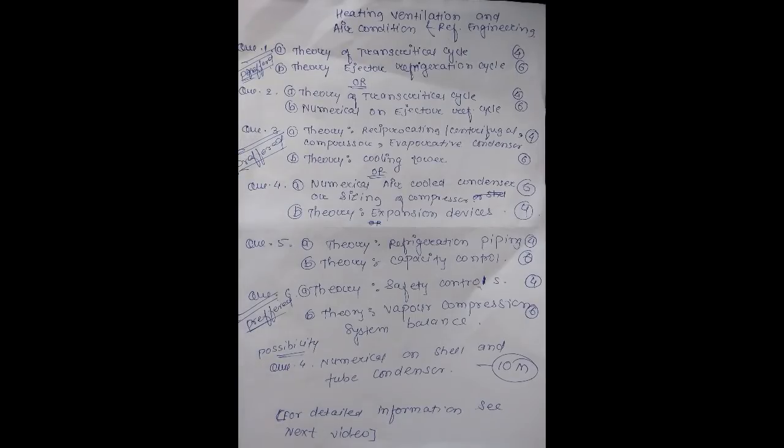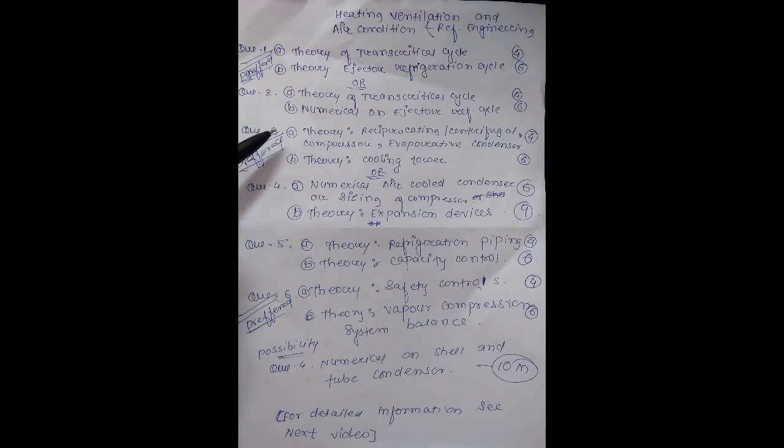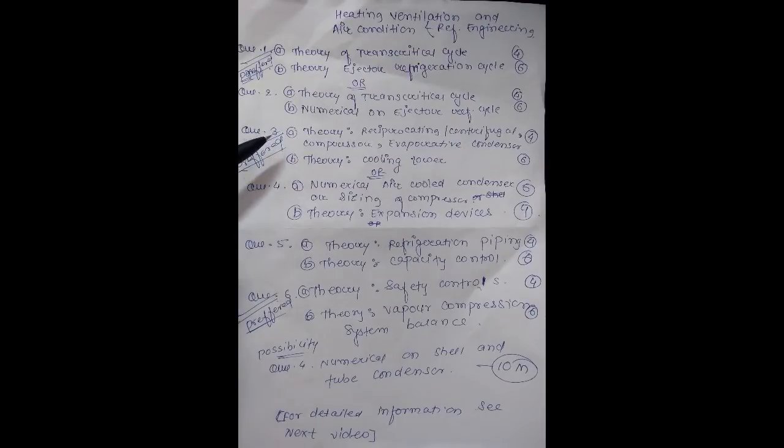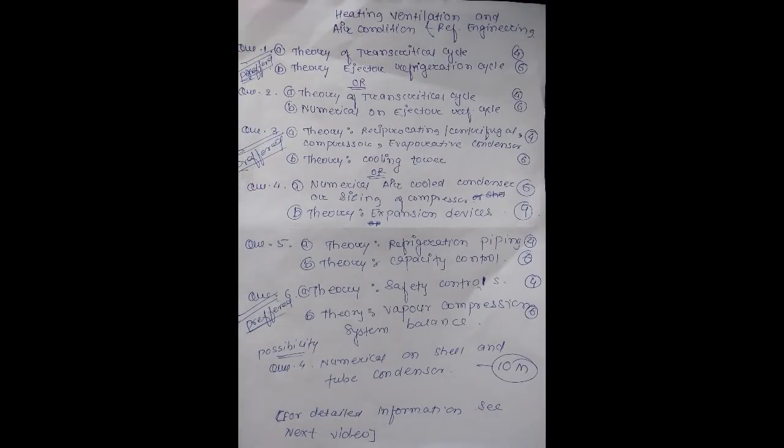Second unit is big and generally the numerical type unit. But question number 3A is theory on reciprocating and centrifugal compressor. Theory on reciprocating and centrifugal compressor types can be found or not. So characteristics can be found.